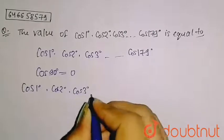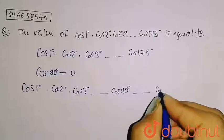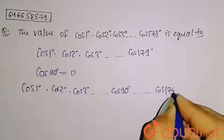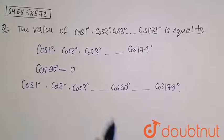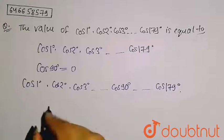then after that, I am writing cos 179°. So we know that cos 90° equals 0. It means that 0 will be multiplied by these terms, which will